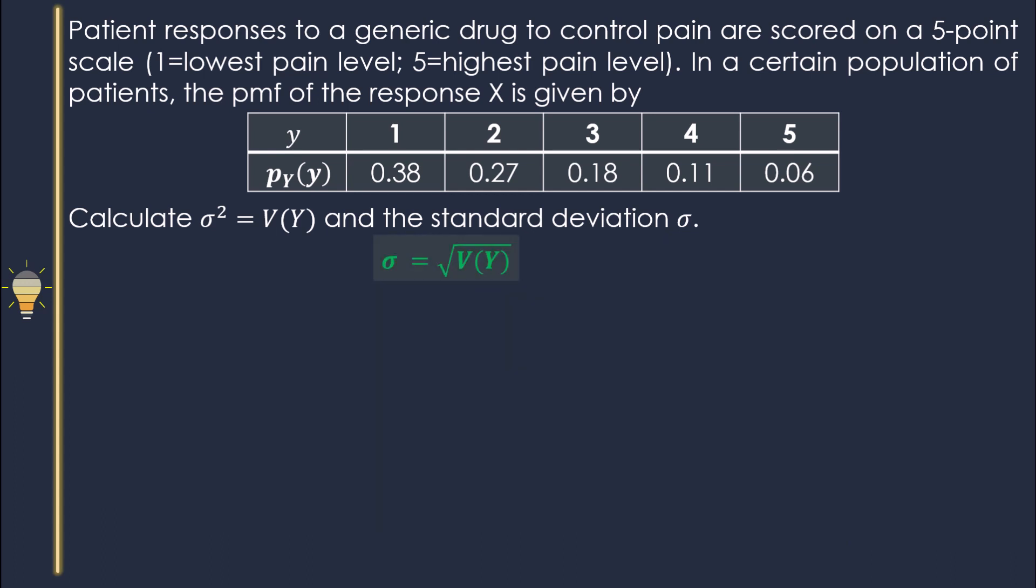Standard deviation is the square root of the variance. So we know the variance, it is 1.5, then get the square root of 1.5, that is 1.22. Therefore, standard deviation is 1.22.